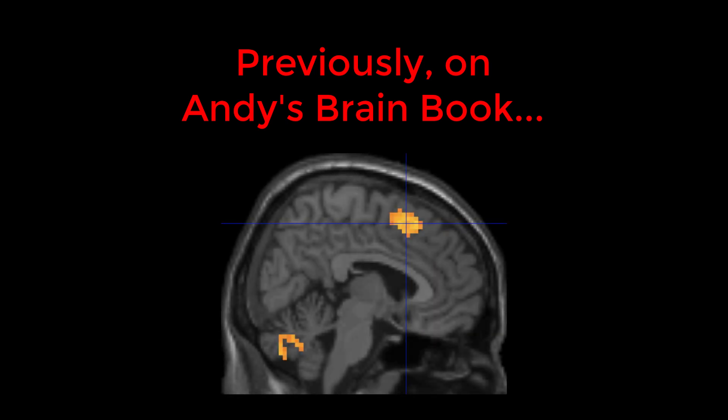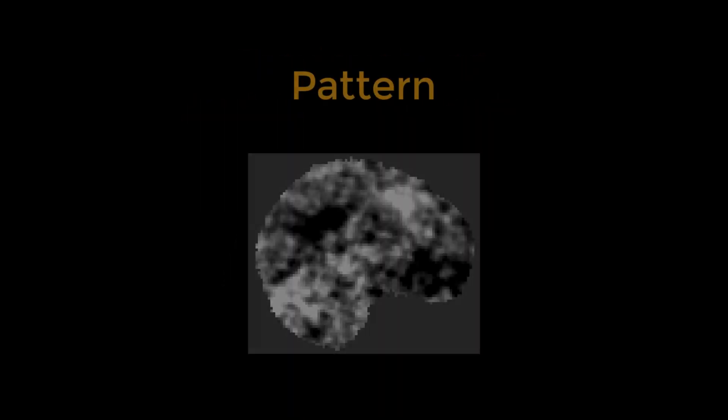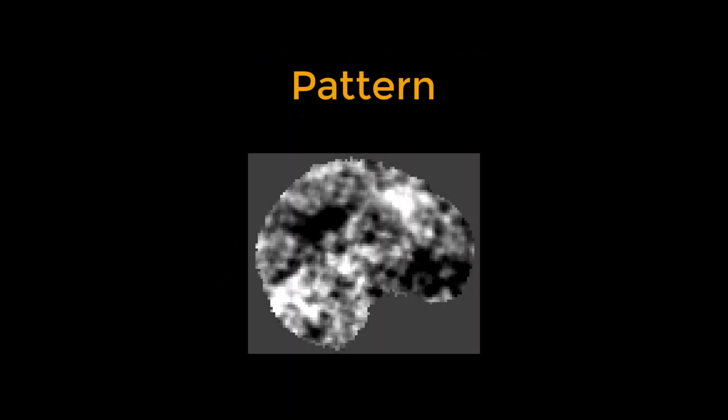In previous modules of this book, you've learned how to do fMRI analysis, detecting where there are significant differences in the bold signal. But what if we wanted to use all of the information in this image, both the positive and the negative signal? In other words, what can we learn from the pattern of activity?